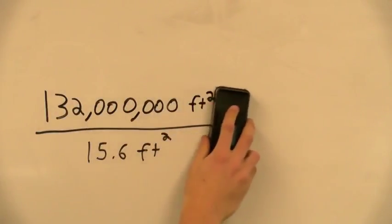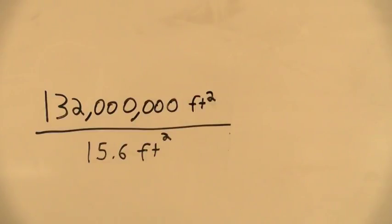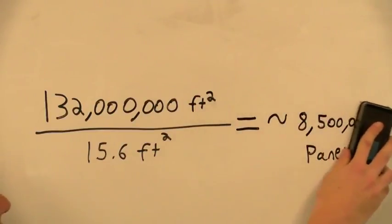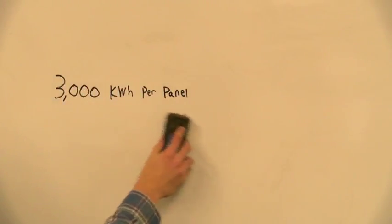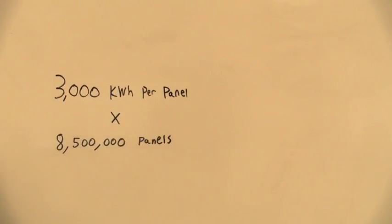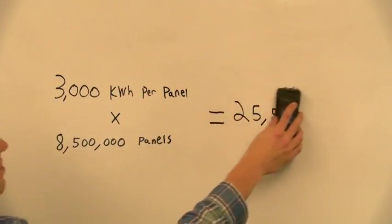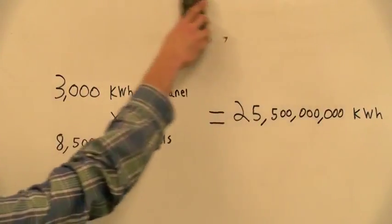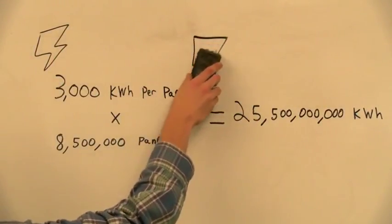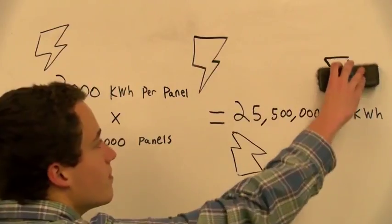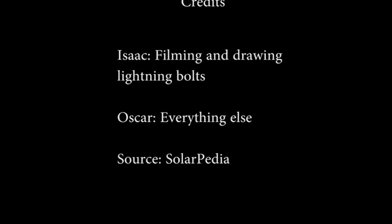So 132 million square feet of roads divided by 15.6 square feet of a panel gives us about 8.5 million panels needed. 3,000 kilowatt hours for each panel multiplied by 8.5 million panels gives us 25 billion kilowatt hours produced each year if all roads, sidewalks, and driveways were covered by solar roadway.